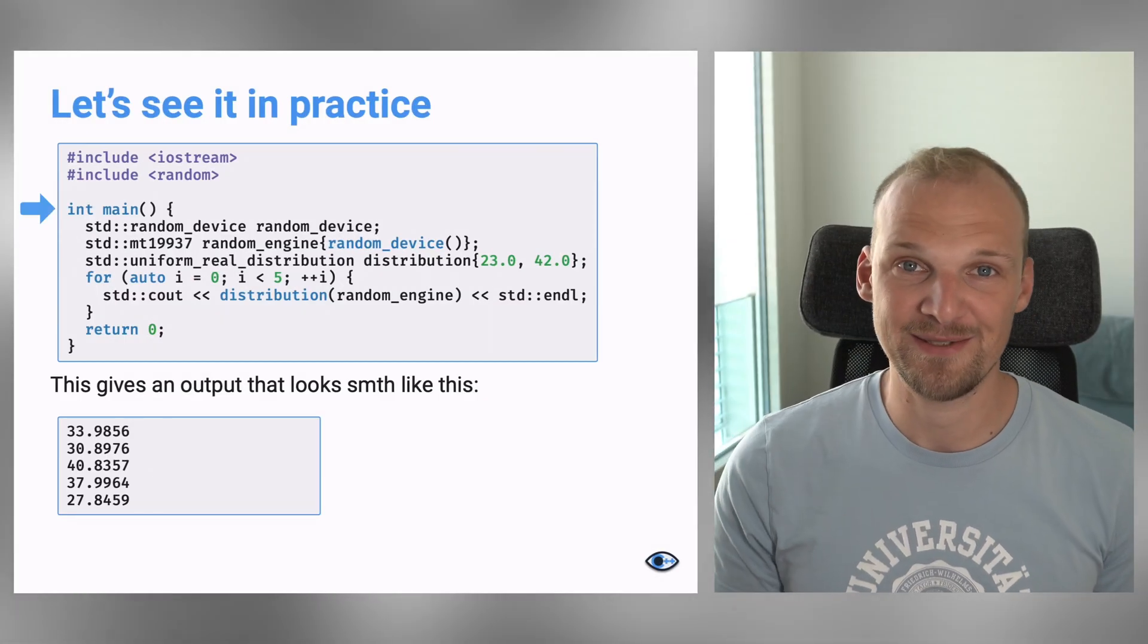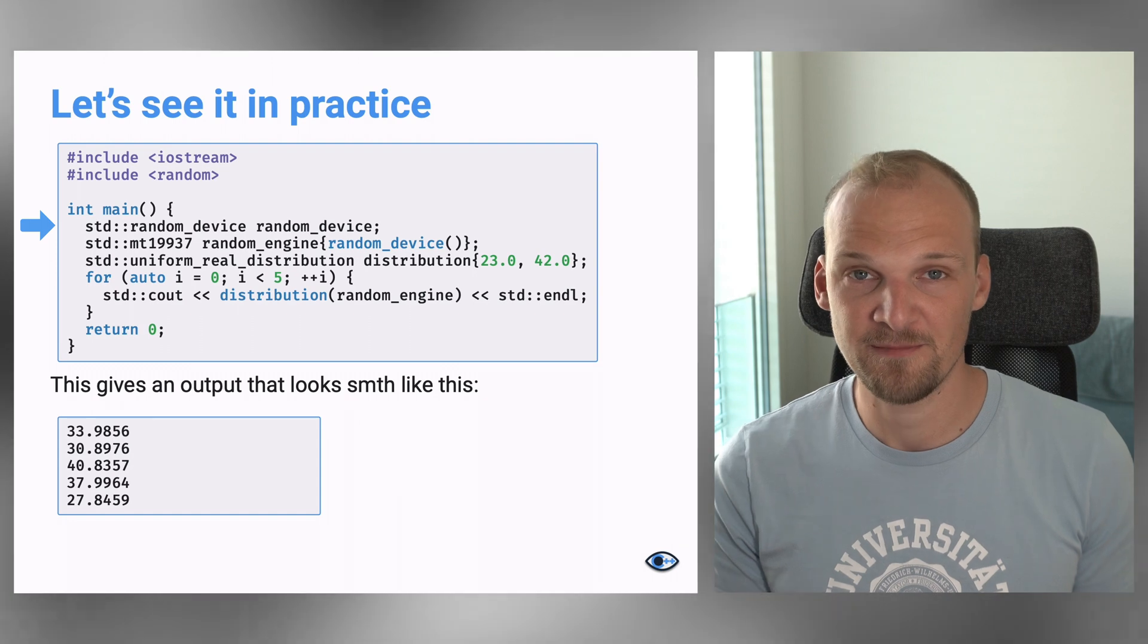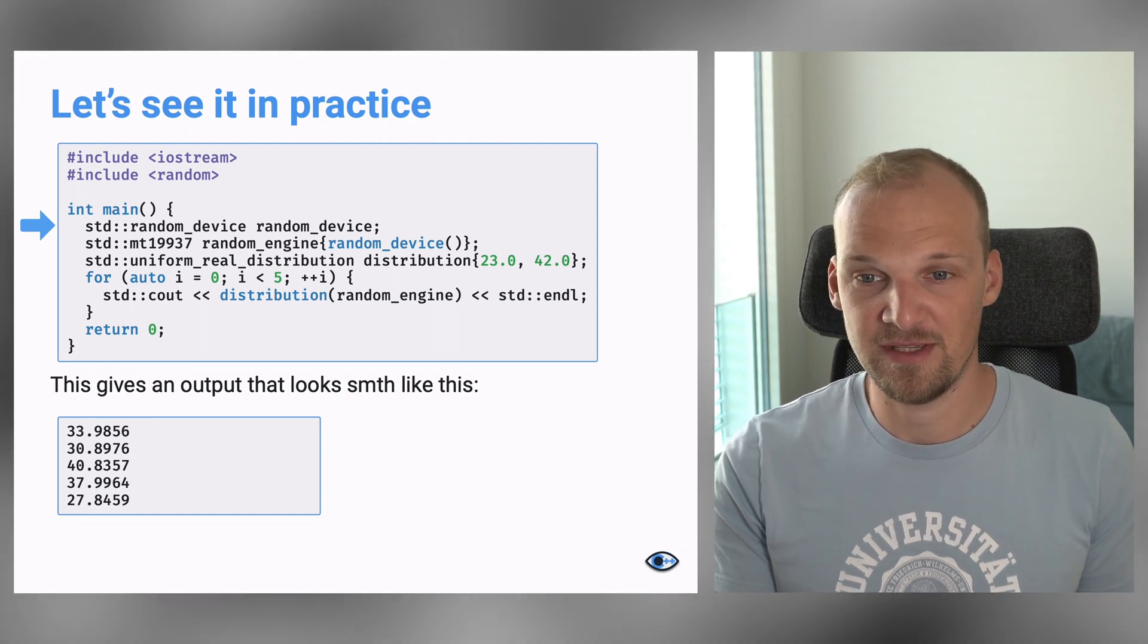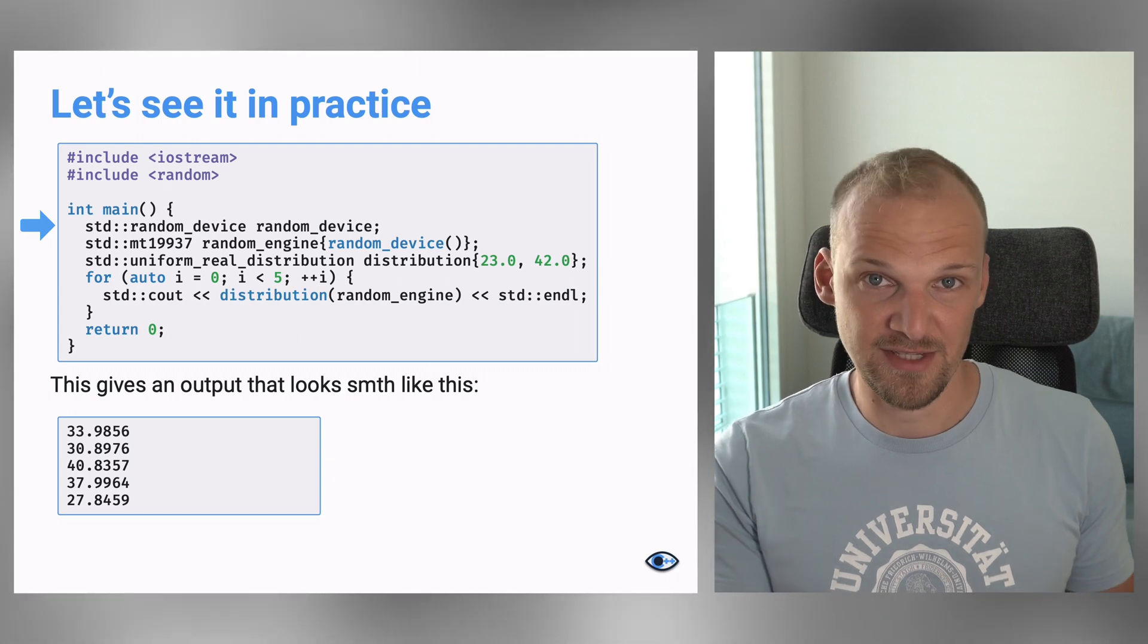Now, let's look at an example of how to do that. For that, we again create a small main function. And in that main function, we create this random device. This random device is now basically just an instance of the random device type.